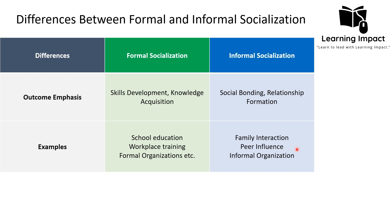Examples of informal socialization include family interaction, peer influence, and informal organizations such as clubs or social networks. The informal process involves steps like observing and participating in a social network, informal mentoring by existing members, forming informal networks like social circles, collectively learning alongside other members, and then adapting to changes together.